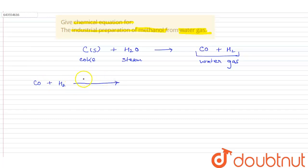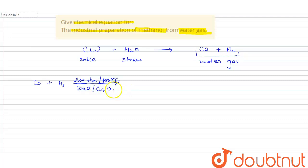Using this water gas, it is pressurized at 200 atmospheres pressure and 400 degrees centigrade in the presence of ZnO and Cr₂O₃, so vapors of methyl alcohol are formed.